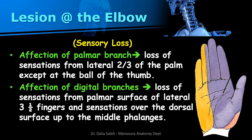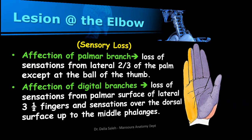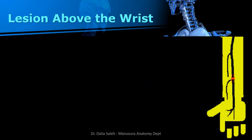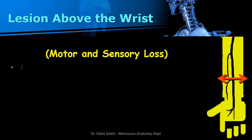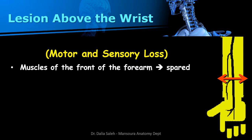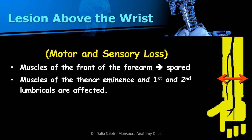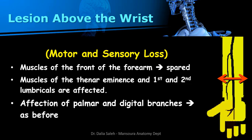If the lesion of the median nerve lies above the wrist, there will be sparing of the muscles of the front of the forearm, while the muscles of the thenar eminence and the first and second lumbricals will be affected. There will also be loss of sensation from the lateral two-thirds of the palm and from the lateral three and a half fingers.